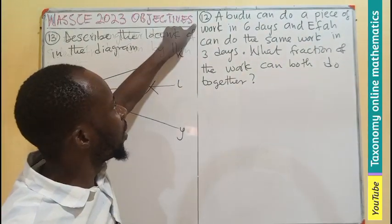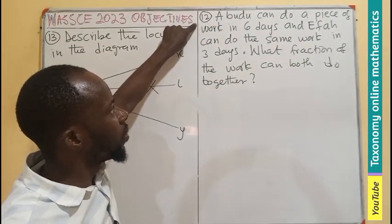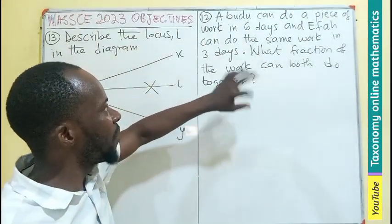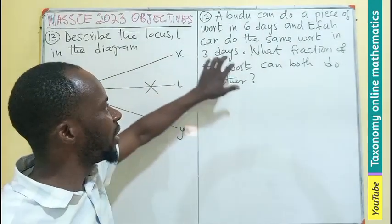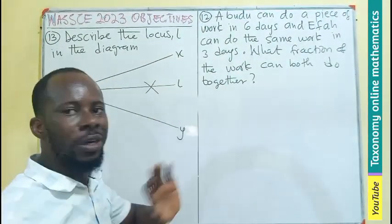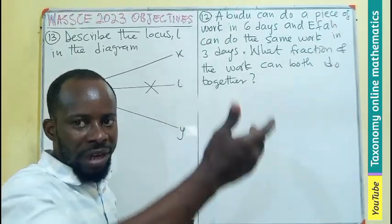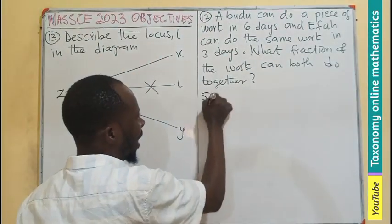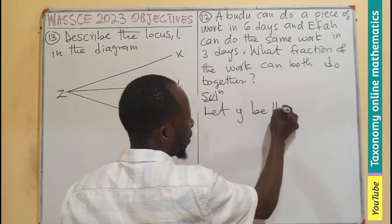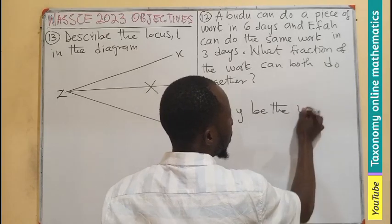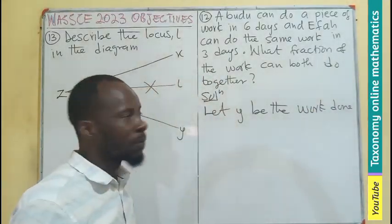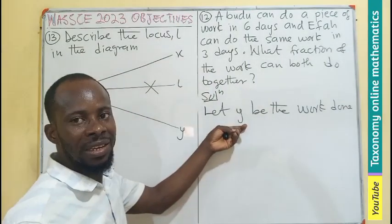Question 12. Abudu can do a piece of work in 6 days and Effa can do the same work in 3 days. What fraction of the work can both do together? We don't know the amount of work they are doing. So let y be the work done.